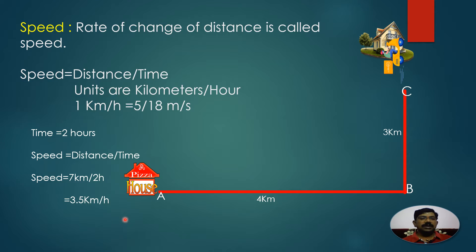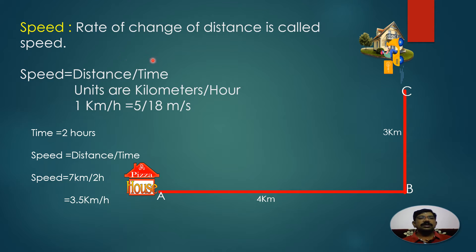Whenever speed is given in kilometers per hour and you want to convert it into meters per second, you have to multiply by 5/18. Speed is the rate of change of distance, and speed is a scalar quantity.